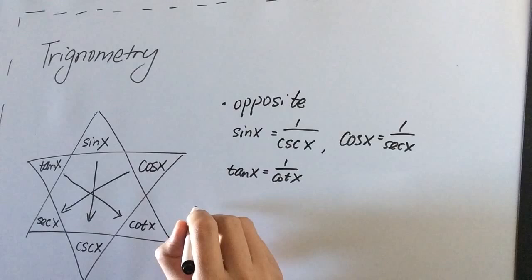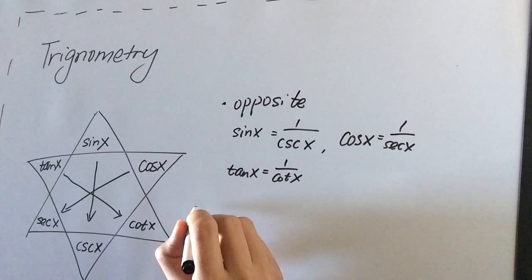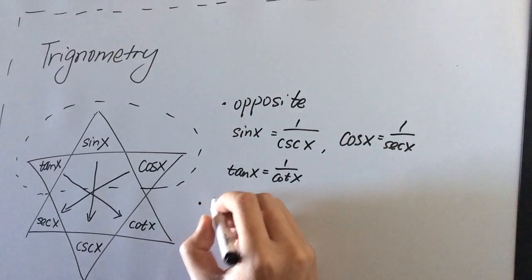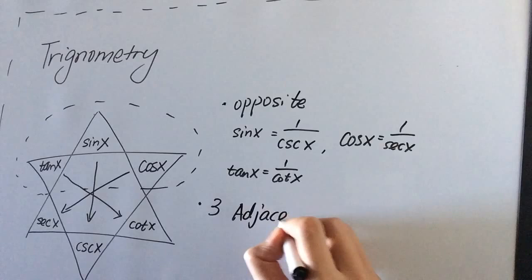Now the other thing is we can see any three adjacent ones. So any three adjacent ones. So what's the pattern there?